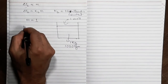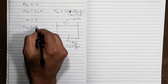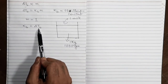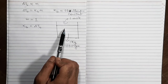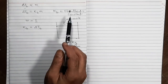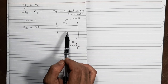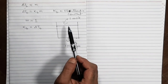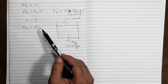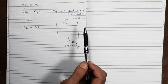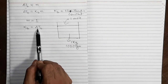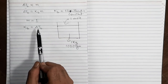When molality becomes one, it becomes clear that Kb equals delta Tb. That means the ebuloscopic constant is nothing but the increase in boiling point of a liquid in solution when you prepare a solution of molality one. So if you want to know the ebuloscopic constant of water, remember that this constant belongs to the liquid whose boiling point is rising because of the addition of impurity.